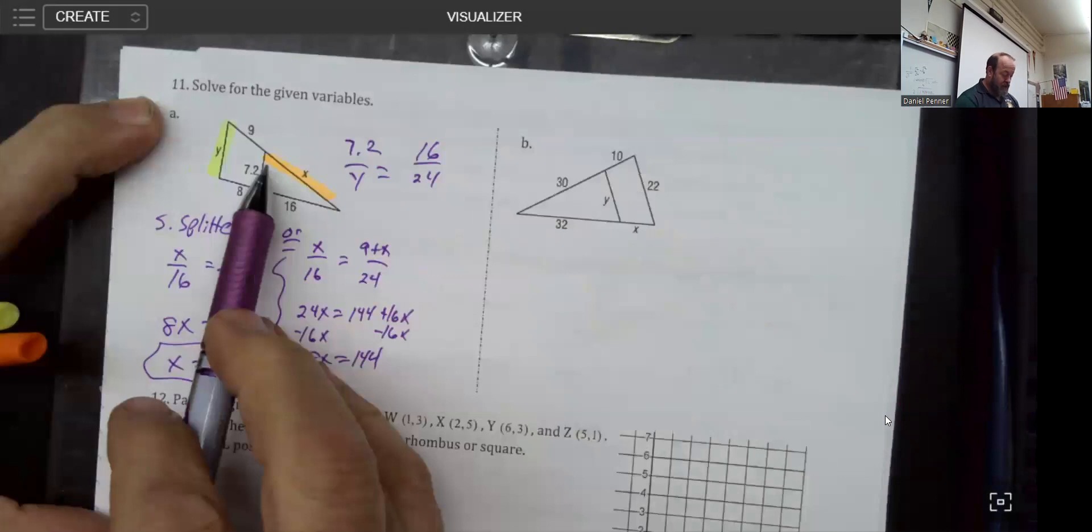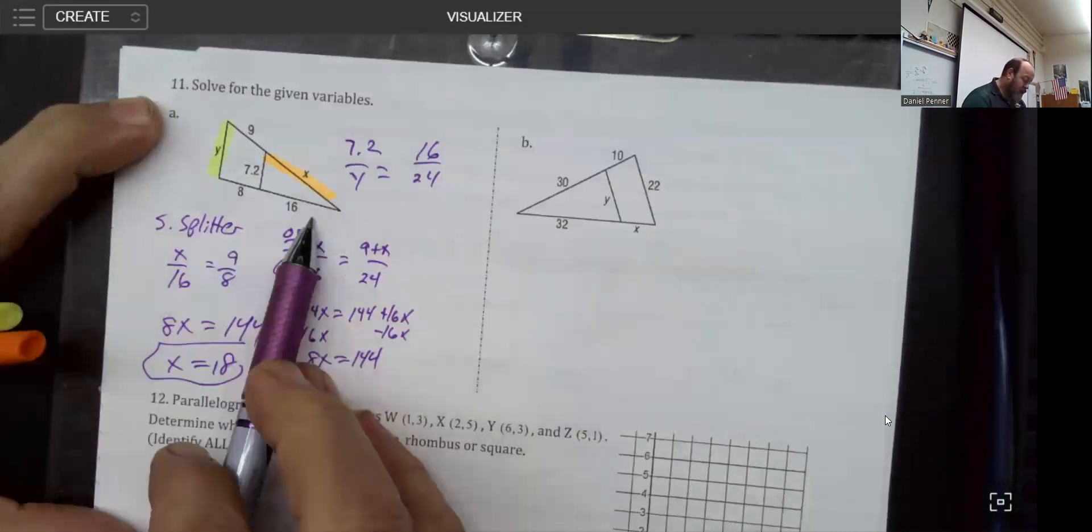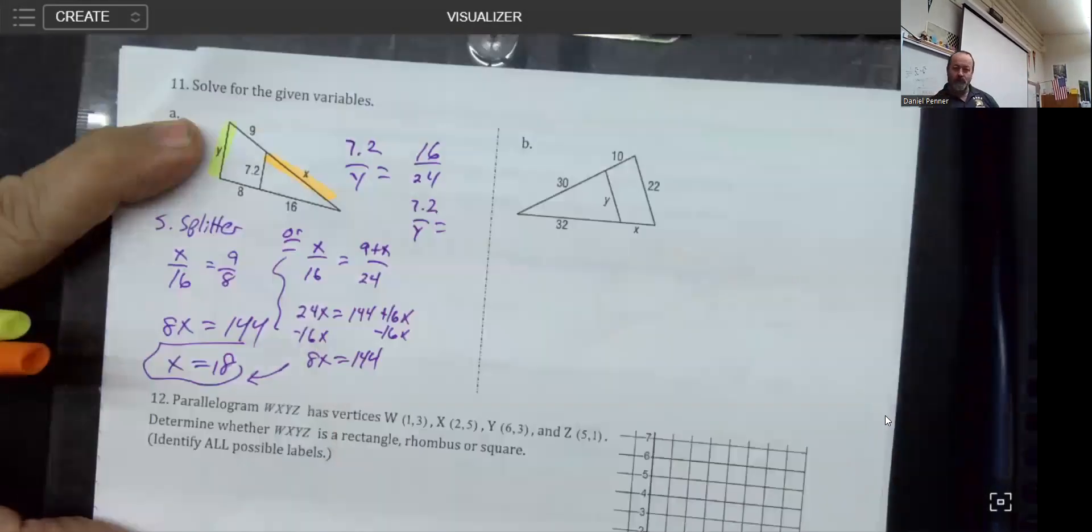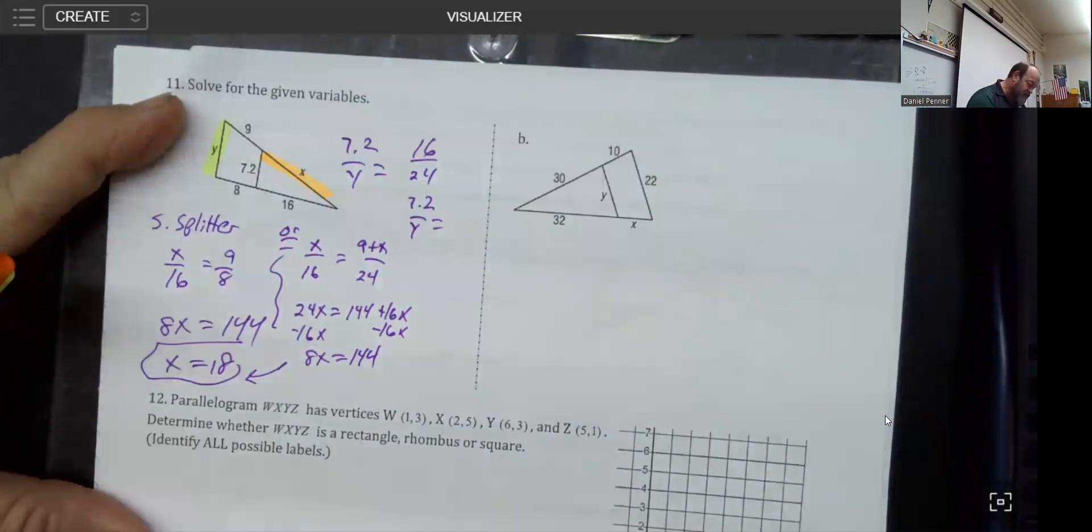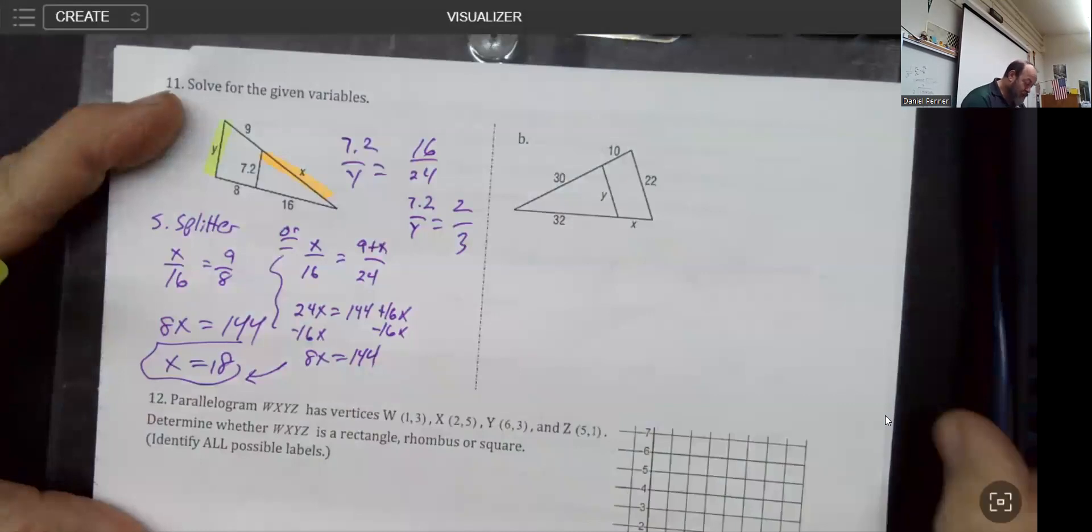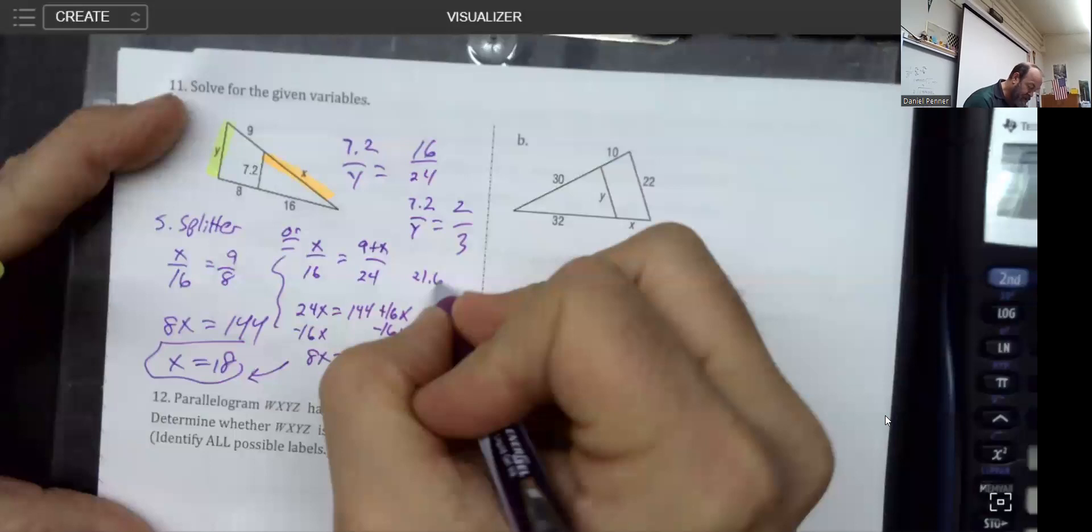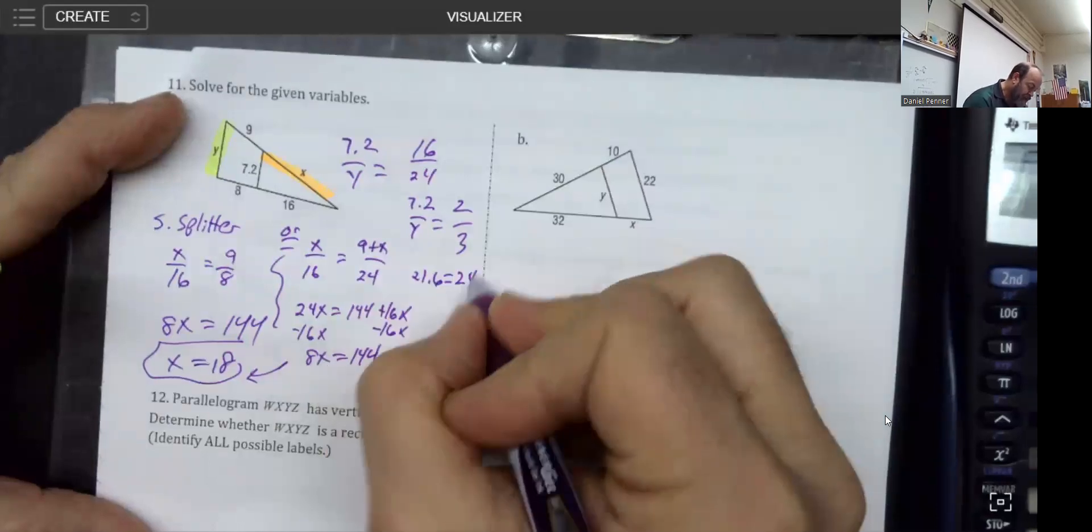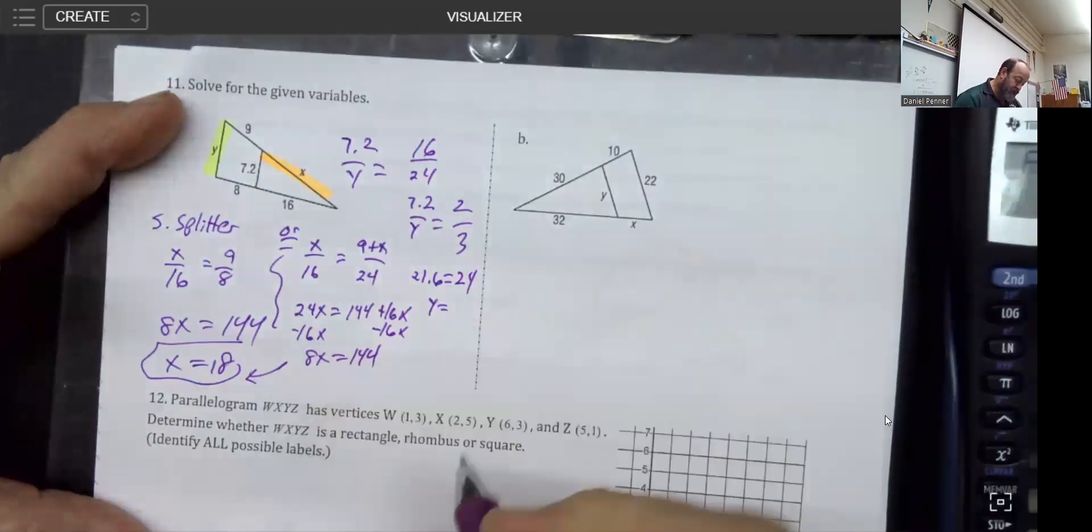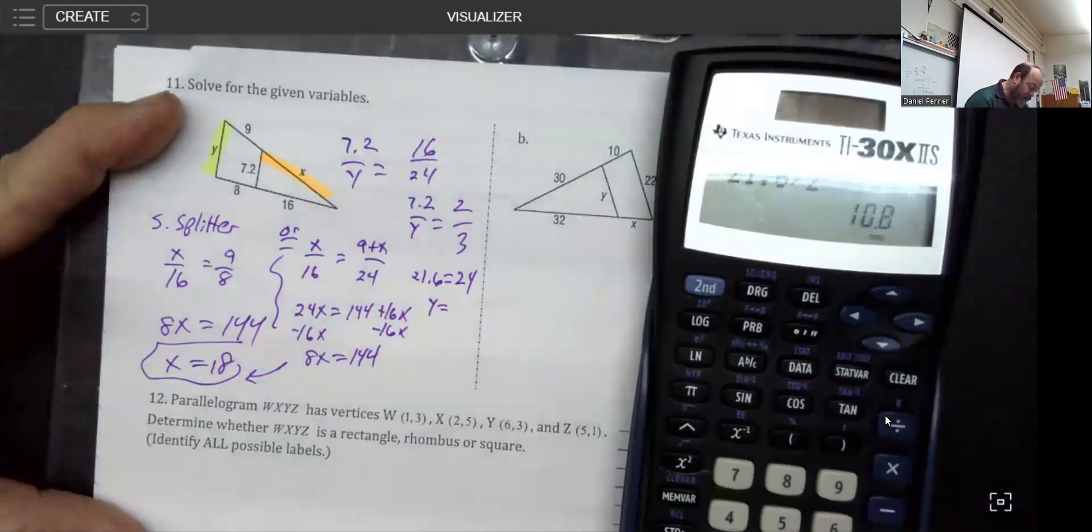To find y, I would say 7.2 over y, the little piece over the big one, equals the little side over the big side. Little triangle over big triangle equals little triangle over big triangle. You can cross multiply early and just go for it, or if you just take a second and reduce, sometimes the mathematics gets prettier. So I cross multiply, which gives me 21.6 equals 2y, and y is 10.8.